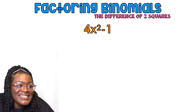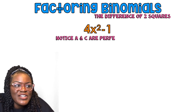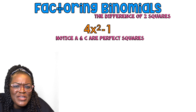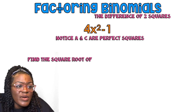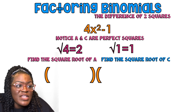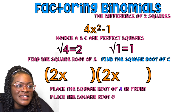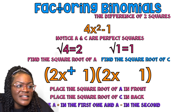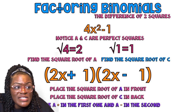Example: 4x² minus 1. Is 4 a perfect square? Yes. Is 1 a perfect square? Yes. Is there a minus in the middle? Yes — so I can use the special pattern. Find the square root of 4 and the square root of 1, put them in their correct positions. The answer is (2x + 1)(2x − 1).